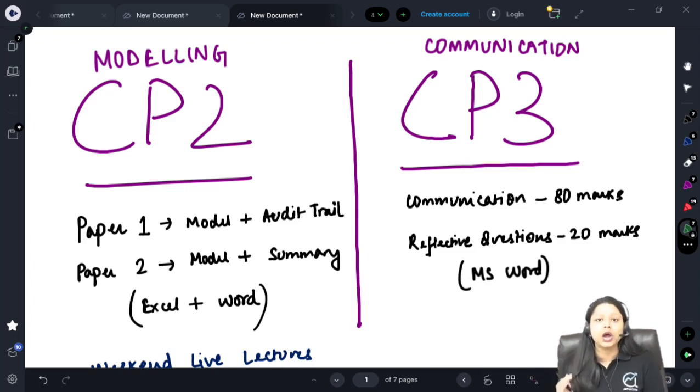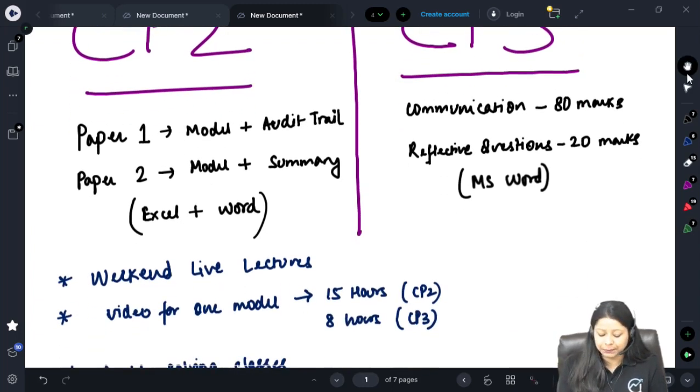For CP2, if you have knowledge of CM and CS papers then it's a good thing. However maybe just having CM1, CS1 knowledge can also be fine. But if you have CM1, CM2, CS1, CS2 cleared then giving CP2 becomes easier. CP3 you again need CM and CS papers done so that you can work on the scenarios. This is all about your CP2 and CP3 paper pattern, what is required before you start these papers.